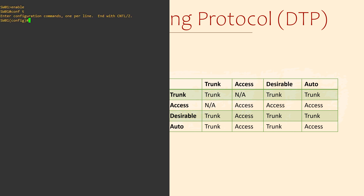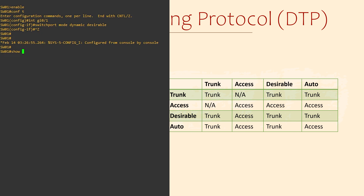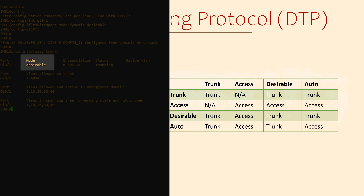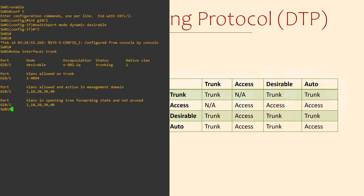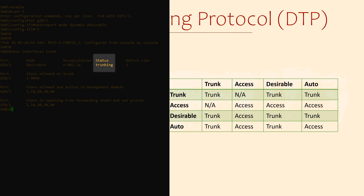Let's see the configuration for this. We have two switches connected to each other. We first enter interface configuration mode, then we configure switchport mode dynamic desirable. Although you can't see it here, the switch on the other side of the link is configured as dynamic auto. If we run show interfaces trunk, we can see that the mode is set to desirable, and in the status column, that this link has successfully become a trunk link.